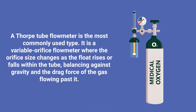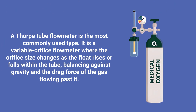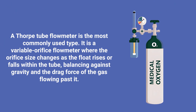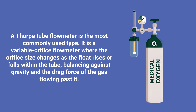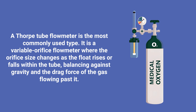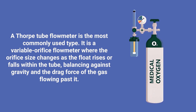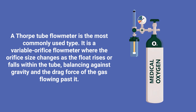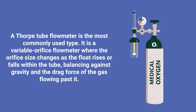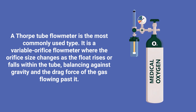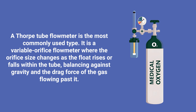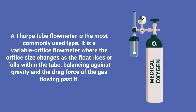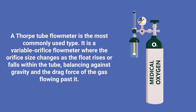A Thorpe tube flow meter is the most commonly used type. It is a variable orifice flow meter where the orifice size changes as the flow rises or falls within the tube, balancing against gravity and the drag force of the gas flowing past it.